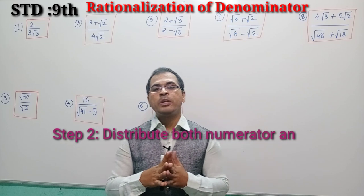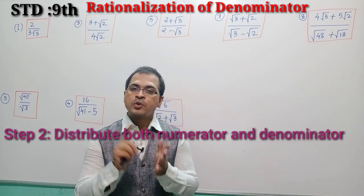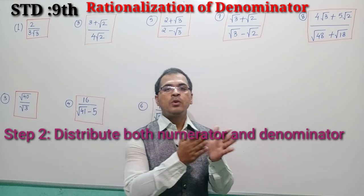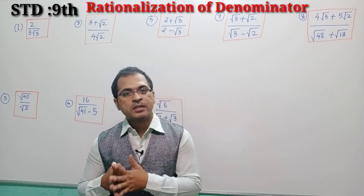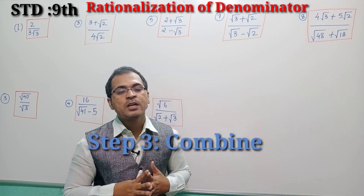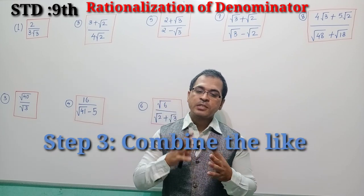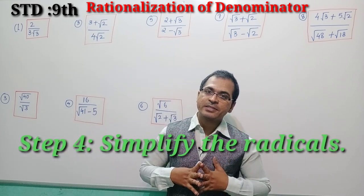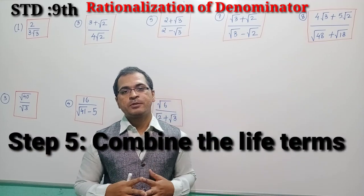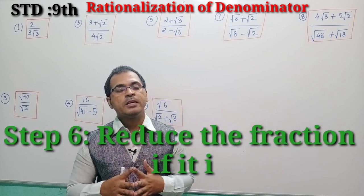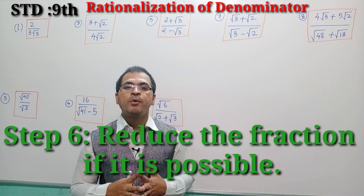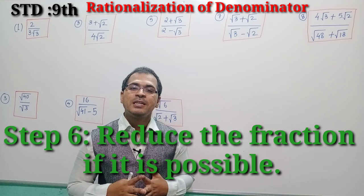Remember that whenever you are multiplying by the conjugate of the denominator, you multiply the outer radical with outer numbers and the inner radical with inner numbers. Third step: combine the like terms. Fourth step: simplify the radicals. Fifth step: again combine the like terms. Sixth step: reduce the fraction if possible; if not, just leave it. These are the key points which will help you rationalize the denominators.